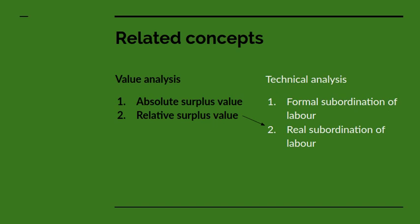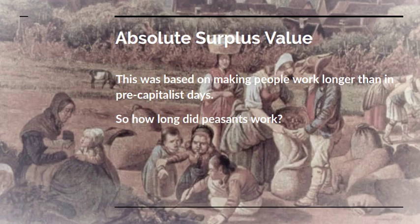We're going to go through first looking at absolute surplus value. The basic idea in absolute surplus value is that when capitalism came into existence, it made people work longer than they had in pre-capitalist times. It forced them to work longer working days and to work more days in the year than they had as independent peasants. So let's have some idea of how long peasants worked.